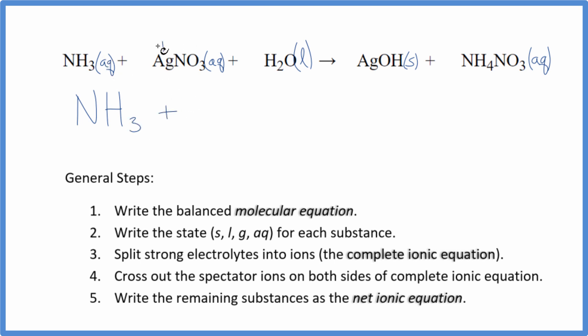Silver is always 1 plus, and the nitrate ion, that's 1 minus. So we have our silver ion, Ag plus, and then we have that nitrate ion, NO3 minus. And then water, we don't split water apart. It's a liquid, so we just have H2O. These are the reactants in our net ionic equation.